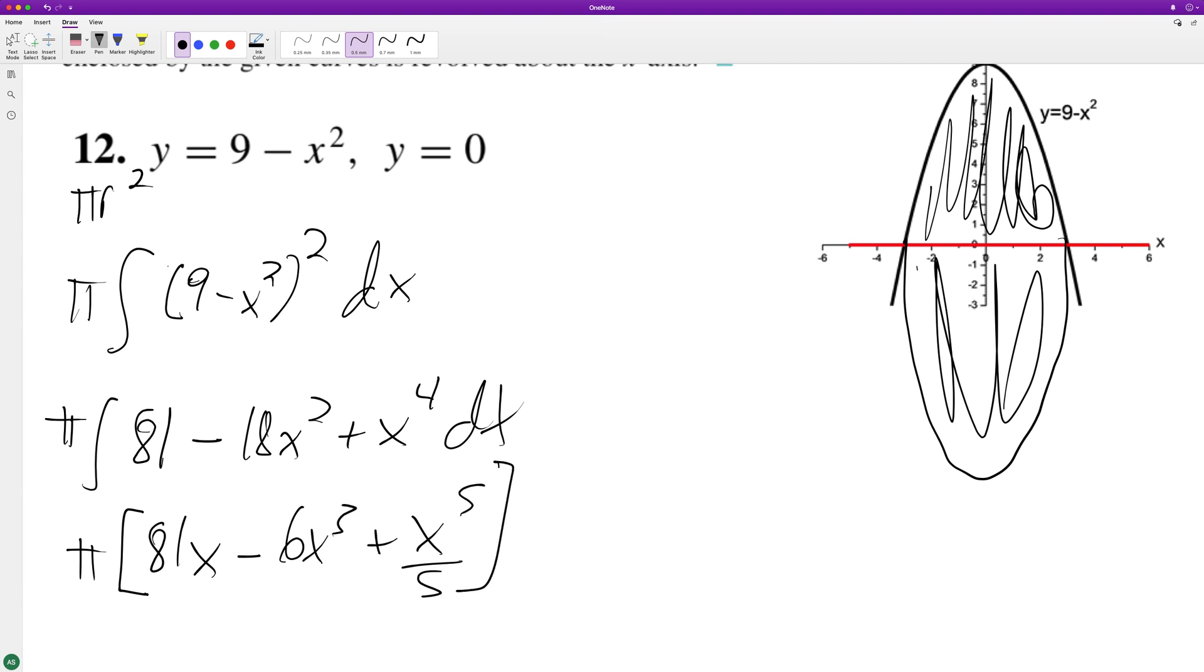We're going from negative 3 to 3. And what you do—sorry, what you do for that is you have 9 minus x squared, and you end up with x squared equals 9, x is equal to plus or minus 3. That's where it meets the x-axis.